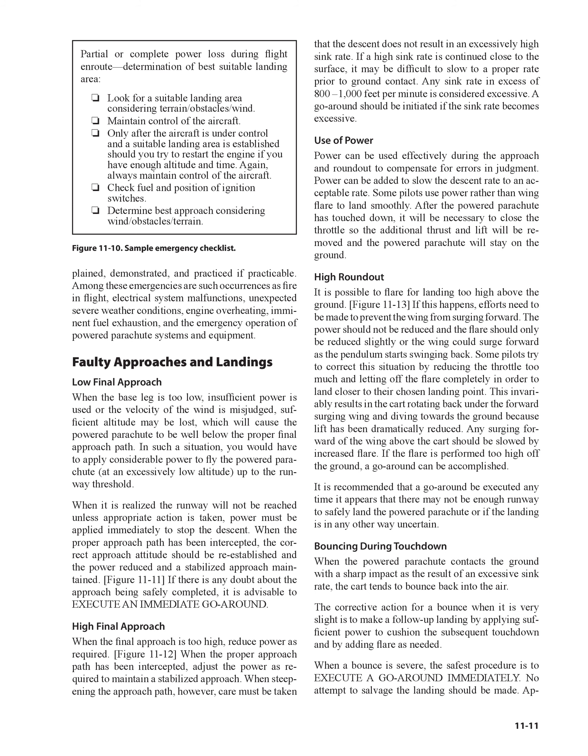High Roundout: It is possible to flare for landing too high above the ground (Figure 11-13). If this happens, efforts need to be made to prevent the wing from surging forward. The power should not be reduced and the flare should only be reduced slightly, or the wing could surge forward as the pendulum starts swinging back. Some pilots try to correct this situation by reducing the throttle too much and letting off the flare completely, which invariably results in the cart rotating back under the forward-surging wing and diving toward the ground because lift has been dramatically reduced. Any surging forward of the wing above the cart should be slowed by increased flare. If the flare is performed too high off the ground, a go-around can be accomplished, and it is recommended any time the landing is uncertain.